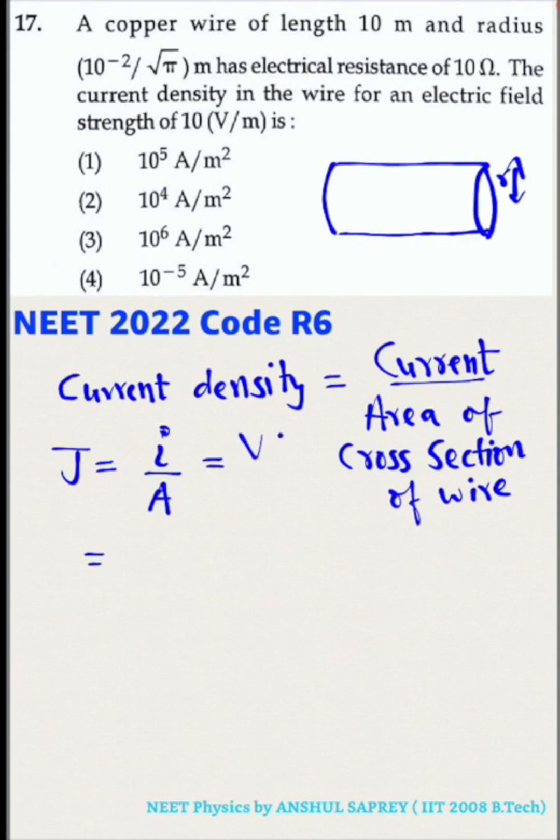Now using Ohm's law, current can be written as voltage divided by resistance capital R. Area of cross-section is pi into radius square small r square. So v divided by resistance into pi into r square.